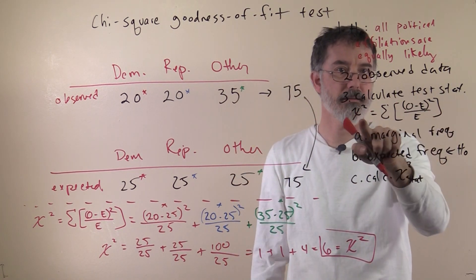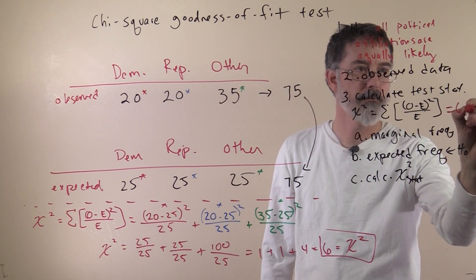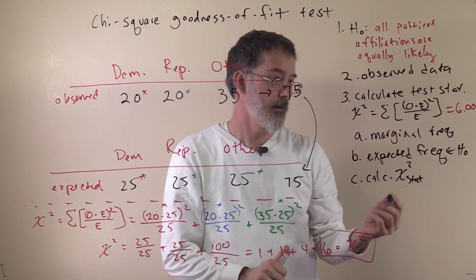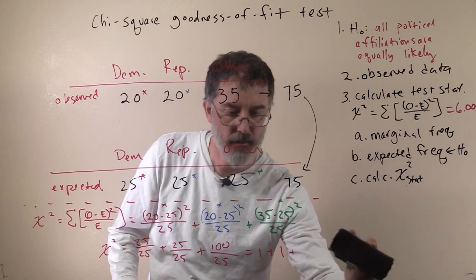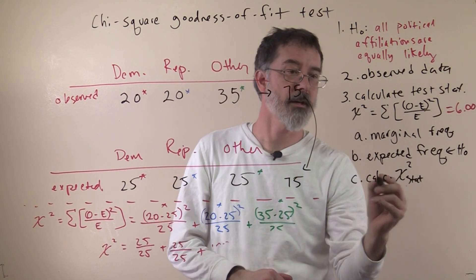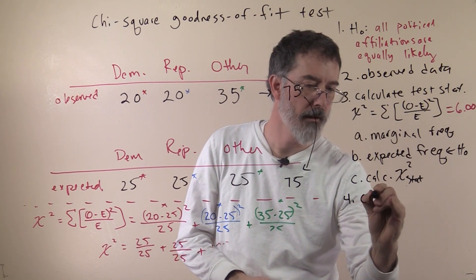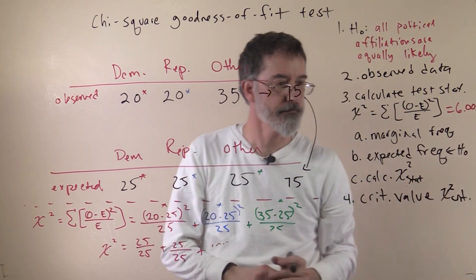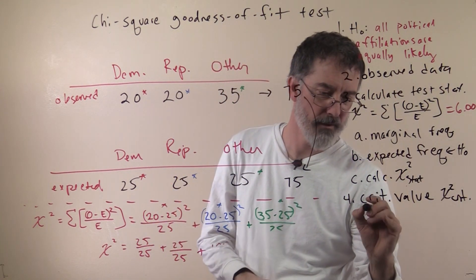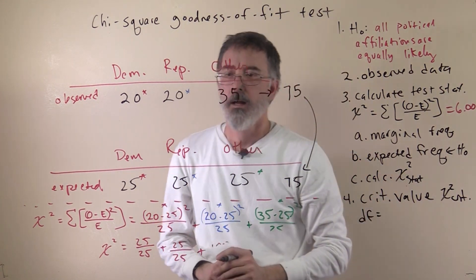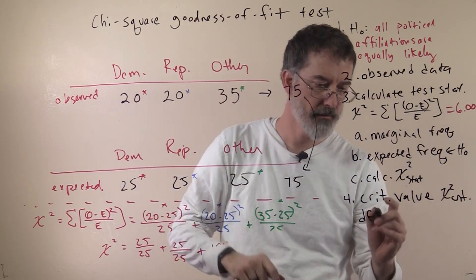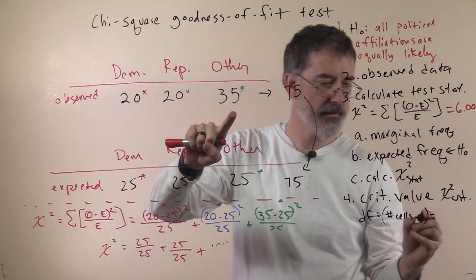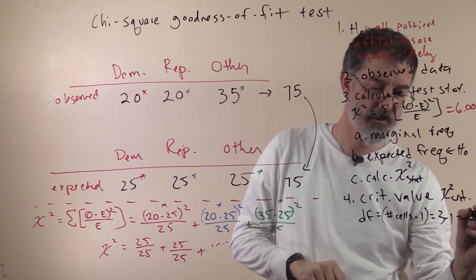We have calculated our test statistic — our chi-square is 6. Now we need to find our critical value so we can tell if we can reject the null hypothesis or not. For the chi-square critical value, we use the same table as before, and for that we need our degrees of freedom. The degrees of freedom is the number of cells minus 1. We have 3 cells, so 3 minus 1 is 2 — we have 2 degrees of freedom.